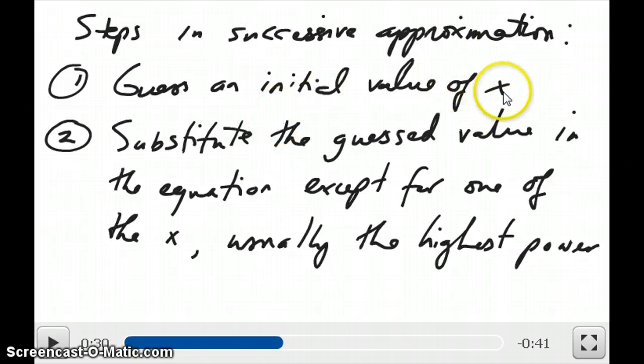but you have to guess what the initial value of x might be. And then what you do is you take that guess and you substitute it into your polynomial. And for every x that you have in that polynomial except one of the x's. And usually the highest power x is the one that you don't substitute. Let me show you an example.